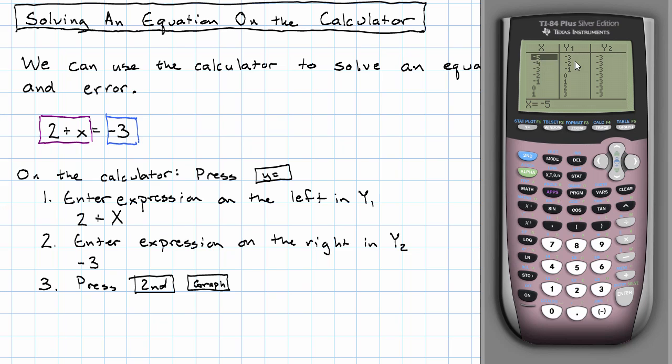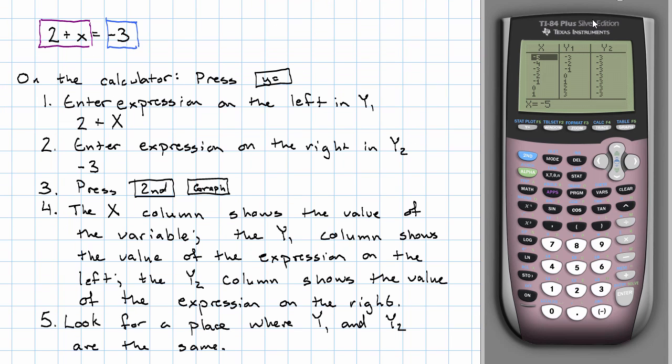When x is negative 5, y1 is negative 3, and y2 is negative 3. When we find the place where y1 and y2 are the same, that's our solution.